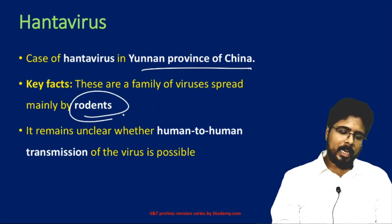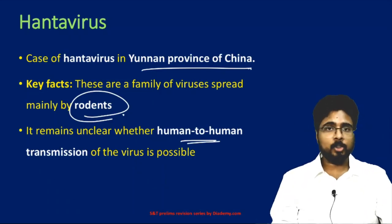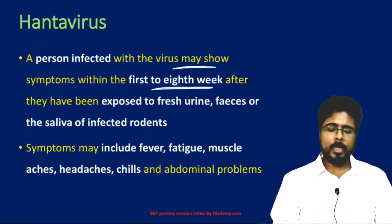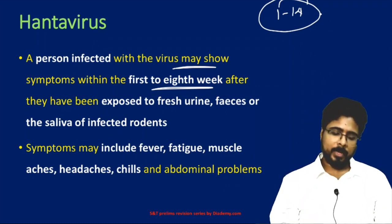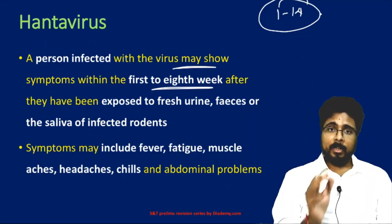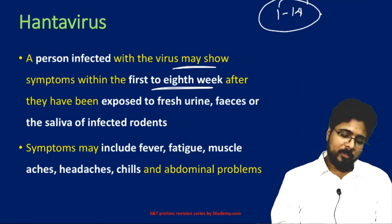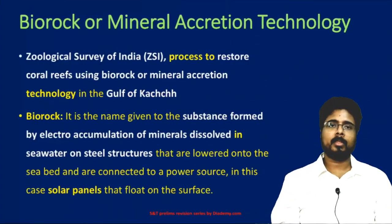It remains unclear whether Hantavirus spreads from human to human or not, but it is transmitted from rodents to humans. A person infected with the Hantavirus may show symptoms within the first to eighth week — it has a long gestation period compared to coronavirus's 1 to 14 days. Exposure occurs through a rodent's urine or feces. Symptoms include fever, fatigue, muscle aches, headaches, chills, and abdominal problems.